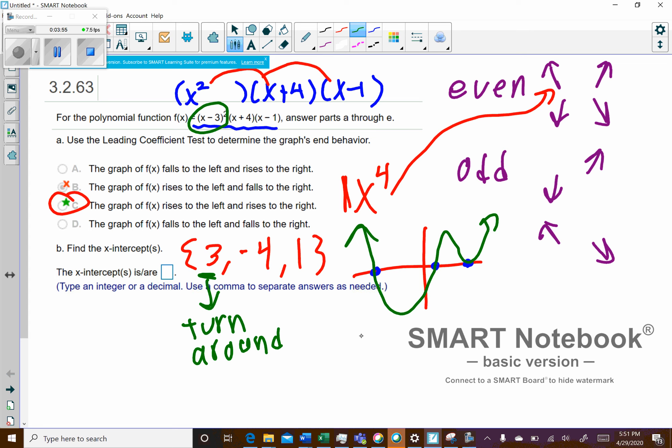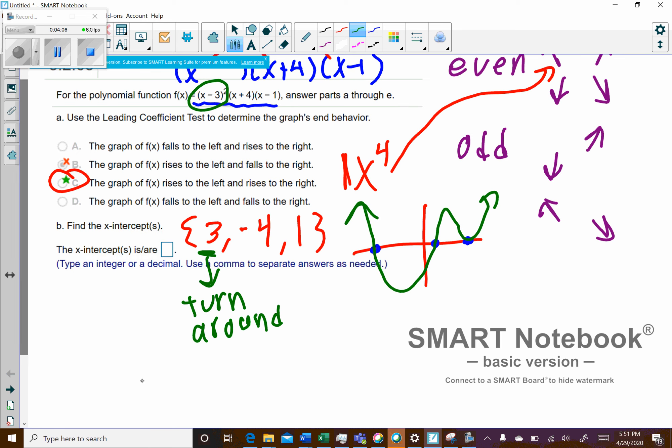So we'll say on that part where they ask us, which ones cross? It would be negative 4 and positive 1. So then they probably ask you for the y-intercept. And so for the y-intercept, you're just going to do f of 0.